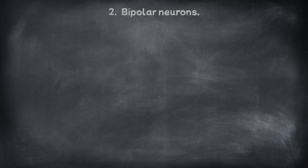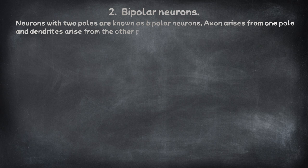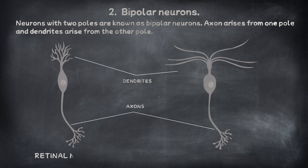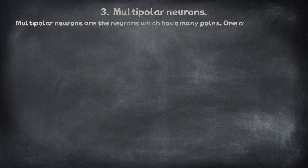Bipolar neurons are neurons with two poles. The axon arises from one pole, and dendrites arise from the other pole. Multipolar neurons are neurons which have many poles — one pole gives rise to the axon, and all other poles give rise to dendrites.